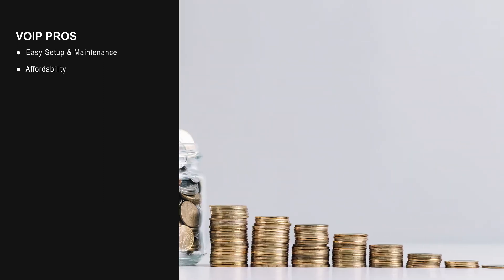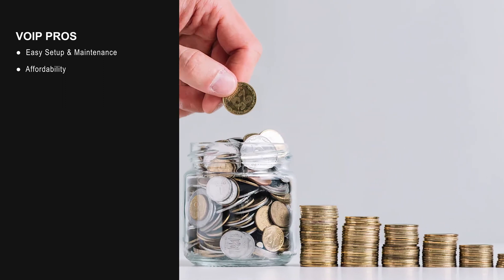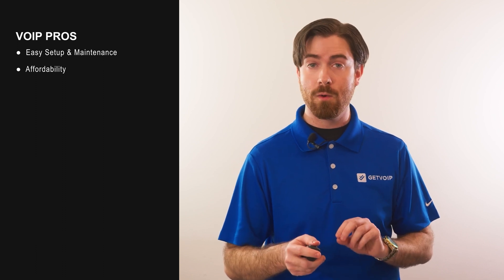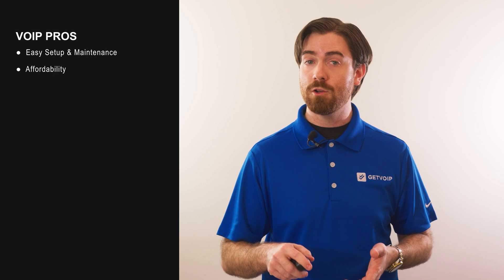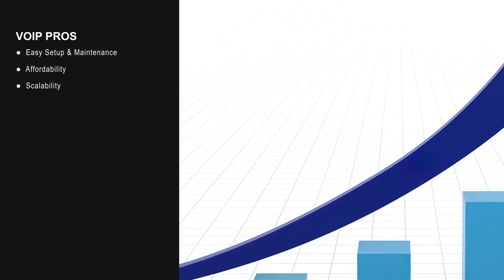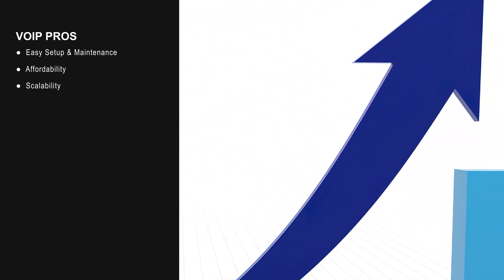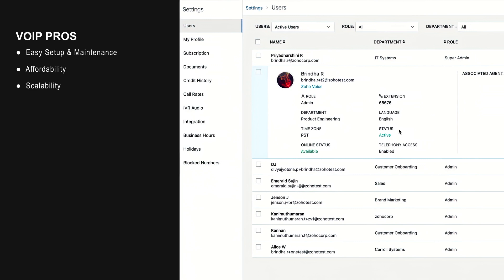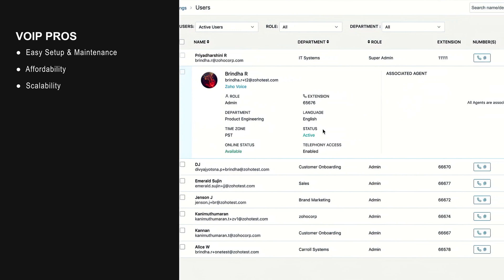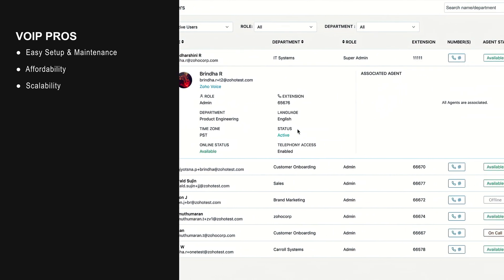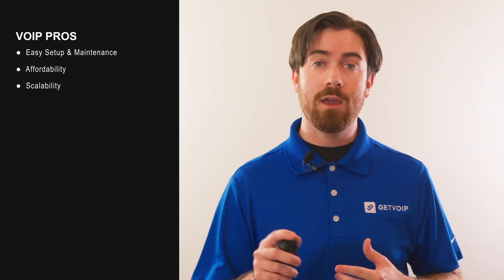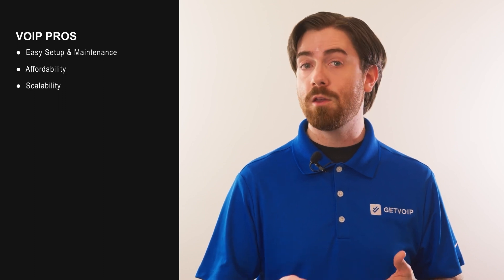VoIP also saves costs in a variety of ways. It eliminates your monthly PSTN landline payments by using your internet system for calling, typically offers unlimited calling within the US and Canada, and saves money through additional bundled features like conference calling and routing. VoIP phone systems are also more scalable than legacy PBX landline systems, allowing you to easily add and remove users and manage phone numbers. Scaling is all done virtually — you can purchase DID numbers from a VoIP provider and add or remove users in minutes with just a few clicks.